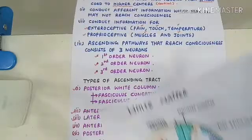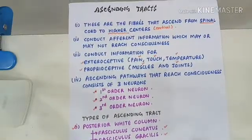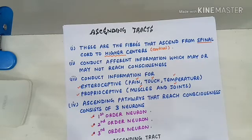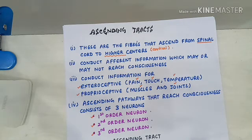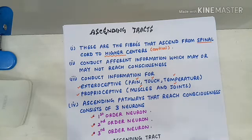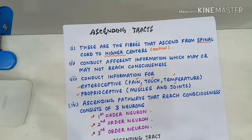Today's part of the video we will be covering only about the ascending tract; we will be continuing the descending tract in the next section of the videos. The ascending tract — these are the fibers that ascend from the level of the spinal cord and end at the level of the higher centers. The higher centers are the cortical centers. That's why these are called ascending tracts.